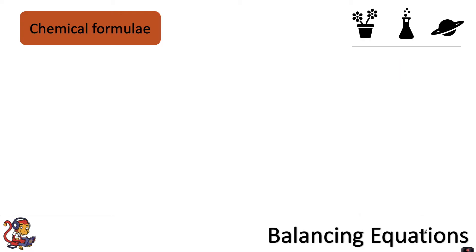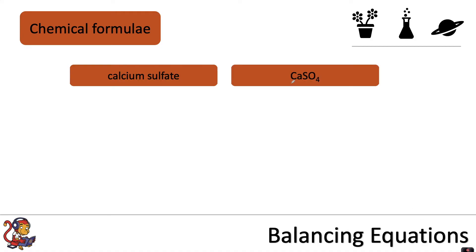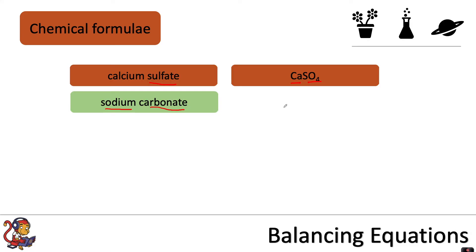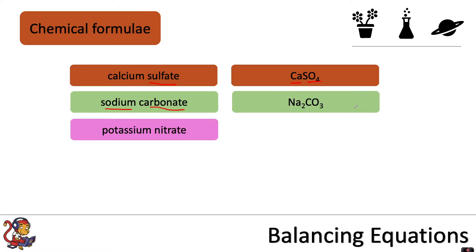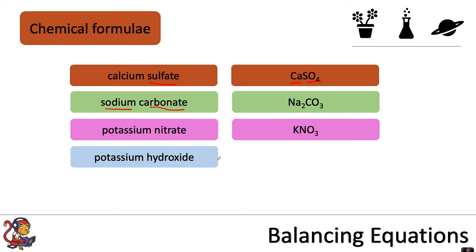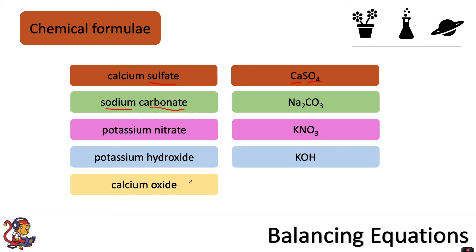Here are some examples. Calcium sulfate: calcium from the periodic table plus the sulfate ending SO₄. Sodium carbonate: sodium (Na) plus carbonate ending CO₃ gives Na₂CO₃. Potassium nitrate: potassium (K) plus nitrate ending NO₃ gives KNO₃. Potassium hydroxide gives KOH. And calcium oxide gives CaO. So we can write chemical formulae for different compounds, which will help us write symbol equations.